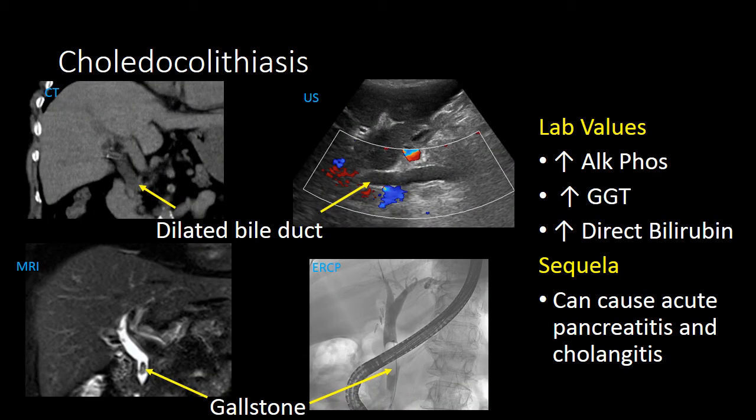When assessing a patient for choledocholithiasis, we can use a number of different modalities. On CT, if you see a dilated common bile duct in a patient with right upper quadrant abdominal pain, this could indicate choledocholithiasis, though the gallstone causing the obstruction will often not be apparent. Ultrasound can also identify a dilated common bile duct, and will sometimes demonstrate the gallstone in the bile duct, but often the stone is so far down in the duct that ultrasound cannot identify it.